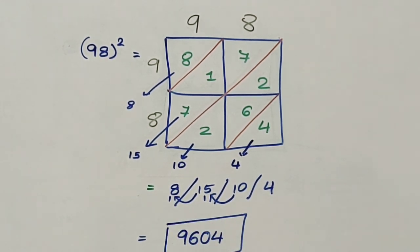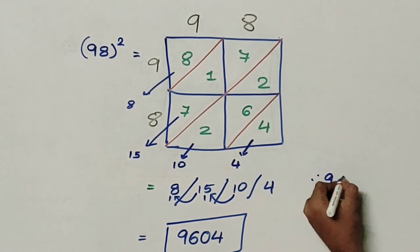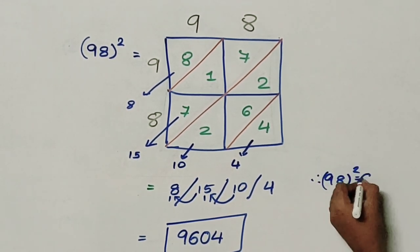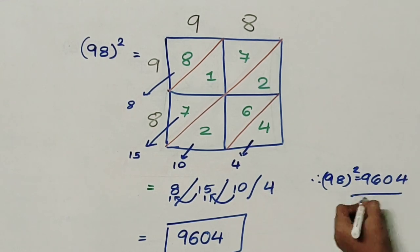So it gets me 9, 6, 0, 4. Therefore 98 square is 9604.